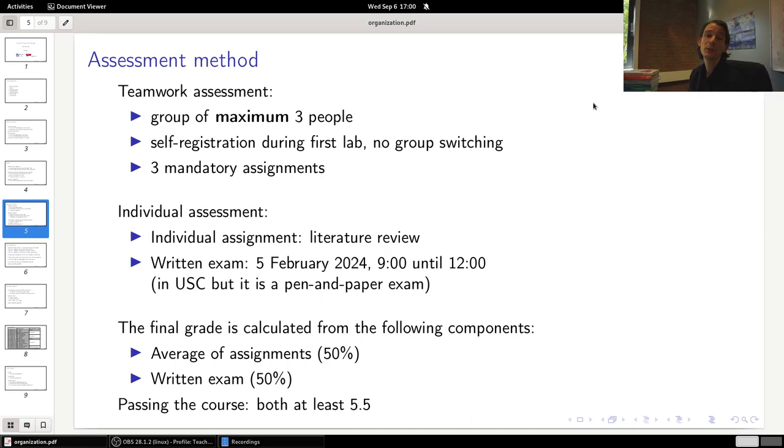There's also a fourth assignment which is done individually. I'll talk about that later a bit more. Finally, there is a written exam. The written exam is on February 5th of 2024. It's planned in the University Sports Centre but it's actually a written exam using pen and paper, not a digital examination. The final grade that you get for this course is calculated from the average of the assignments, the four assignments, which counts for 50%, and the written exam, which also counts for 50%. It is necessary to pass this course to obtain at least a 5.5 for both of these components.